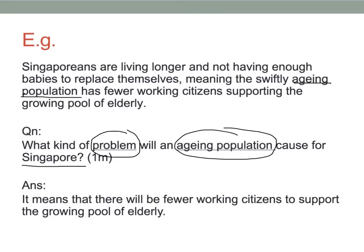The answer should be either before or after the phrase 'ageing population.' The trick is to figure out what is the problem. Is it the fact that Singaporeans are living longer? Cannot be. Is the fact that they're not having enough babies a problem in itself? It could lead to a problem, but in itself it's not a problem. So what about the fact that there are fewer working citizens supporting the growing pool of elderly? Does that sound more like a problem? Yes, it does. So the answer is: it means that there will be fewer working citizens to support the growing pool of elderly.